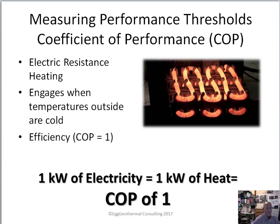In energy consumption, appliances and equipment are normally rated in coefficient of performance. The coefficient of performance is important in that it shows how much energy is consumed and how much energy is produced from an appliance. In the case of electric resistance heat strips, one kilowatt of electricity equals one kilowatt of heat. So electric resistance heat strips such as a blow dryer, a toaster, or a space heater would have a coefficient of performance of one.